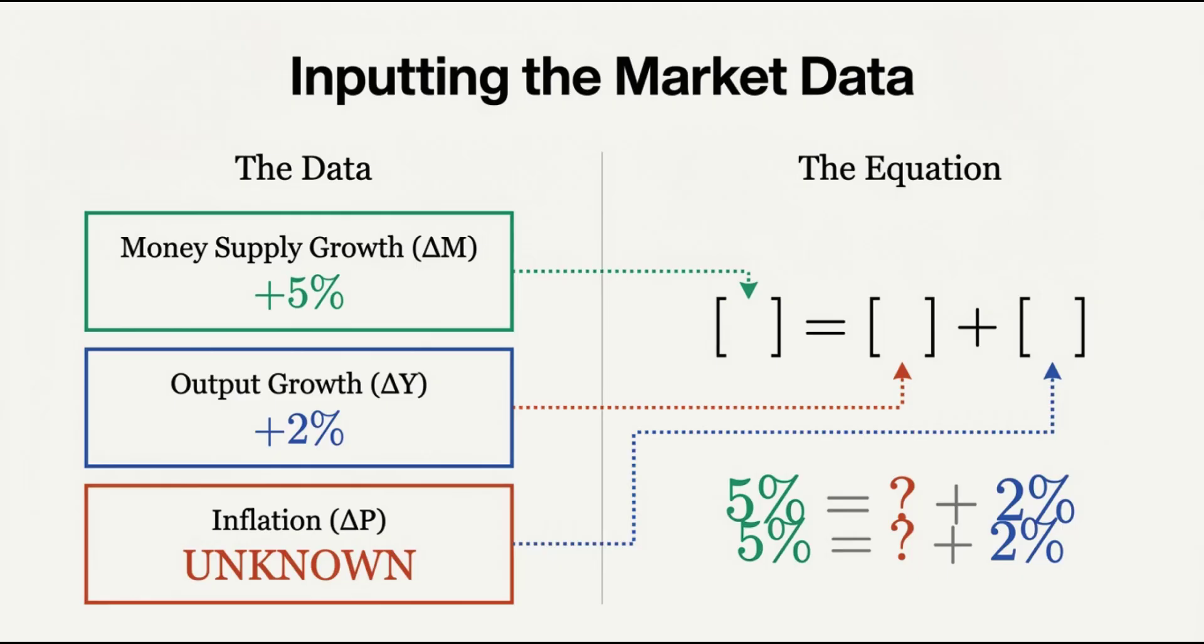Our master key is called the Quantity Theory of Money. Now that equation, M times V equals P times Y, might look a little intimidating, but the idea behind it is actually pretty straightforward. M is the total money supply. V is something called the velocity of money, basically how many times a single dollar gets spent in a year.